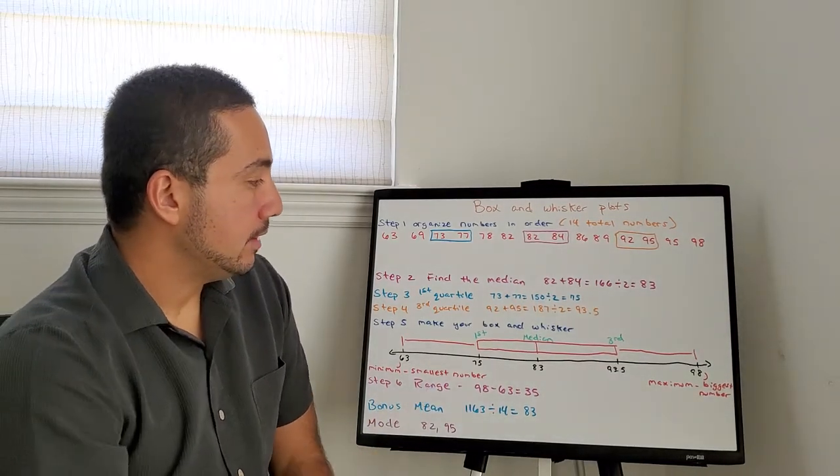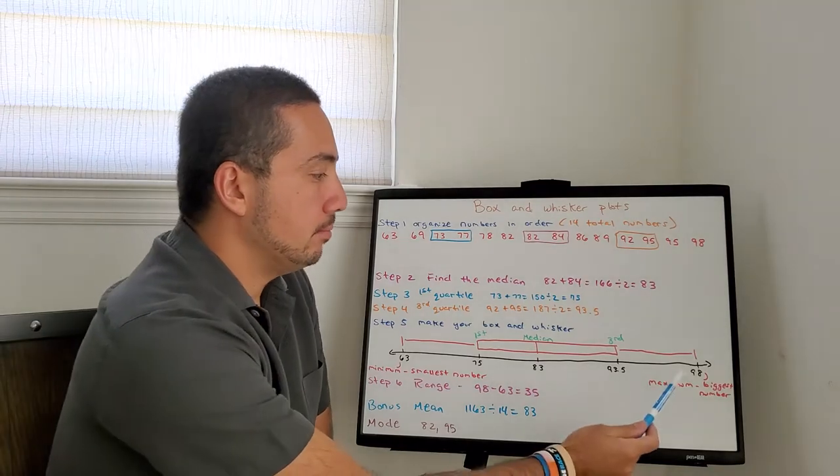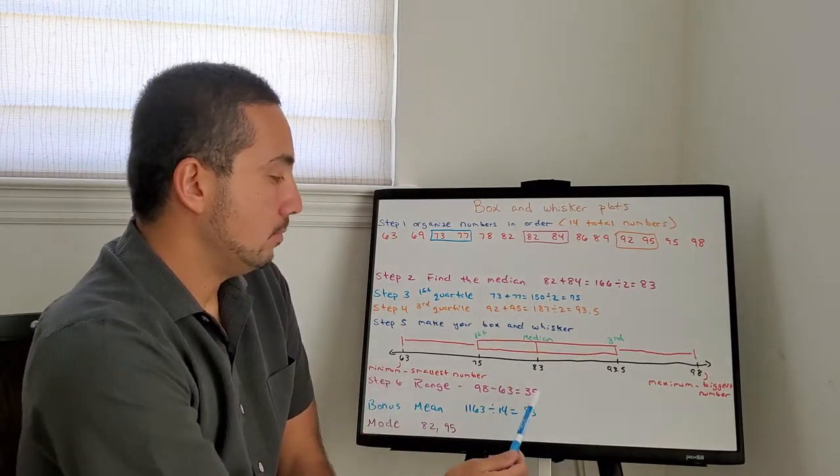Step 6, get the range. 98 minus 63. Maximum minus minimum equals 35.